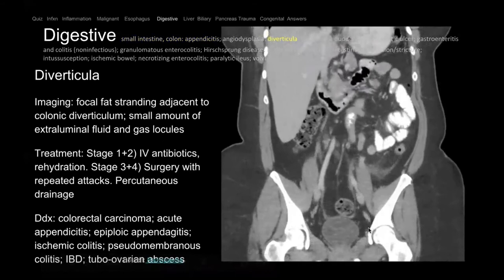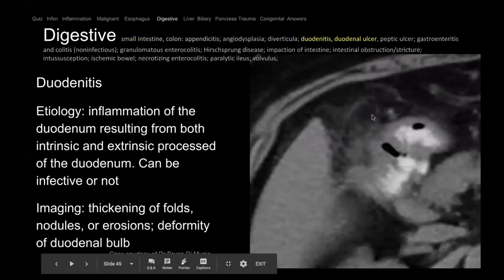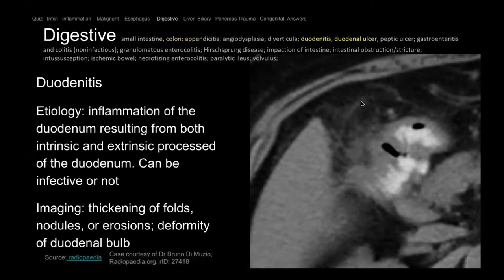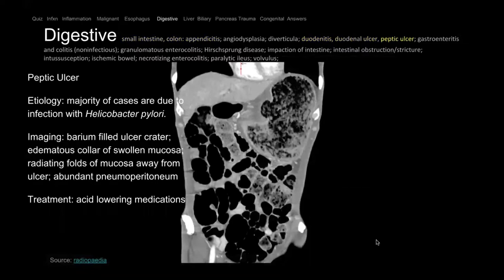Here's a very zoomed-in view of the duodenum. This is the liver, pancreas, and duodenum. There's thickening of the duodenum and fat stranding. This is duodenitis — inflammation — which can be from ulcers, trauma, or post-ERCP complications where the duodenum is accidentally perforated. You want to look for free air to make sure there's no perforation, because that requires surgical correction.